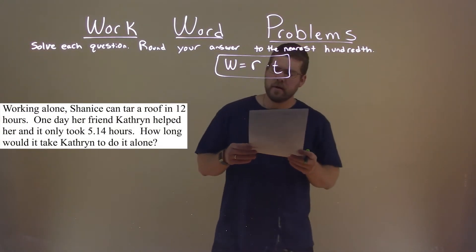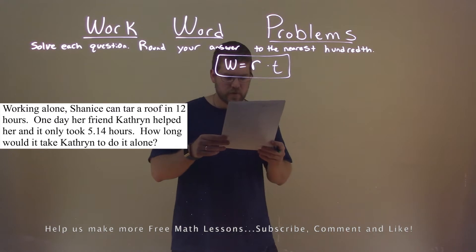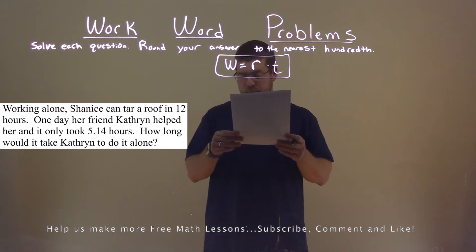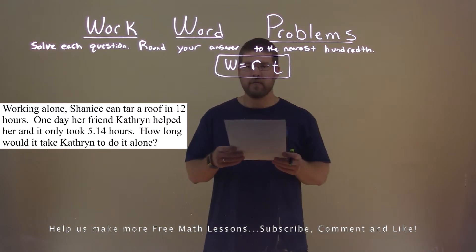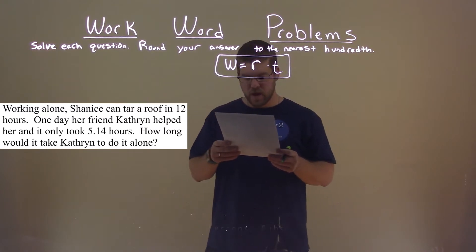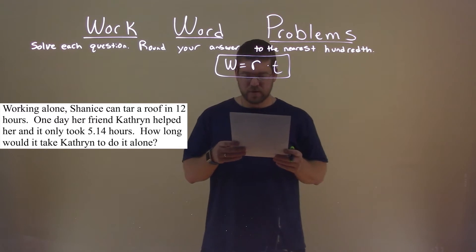We're given this problem right here. Working alone, Shanice can tar a roof in 12 hours. One day, her friend Catherine helped her, and it only took 5.14 hours. How long would it take Catherine to do it alone?